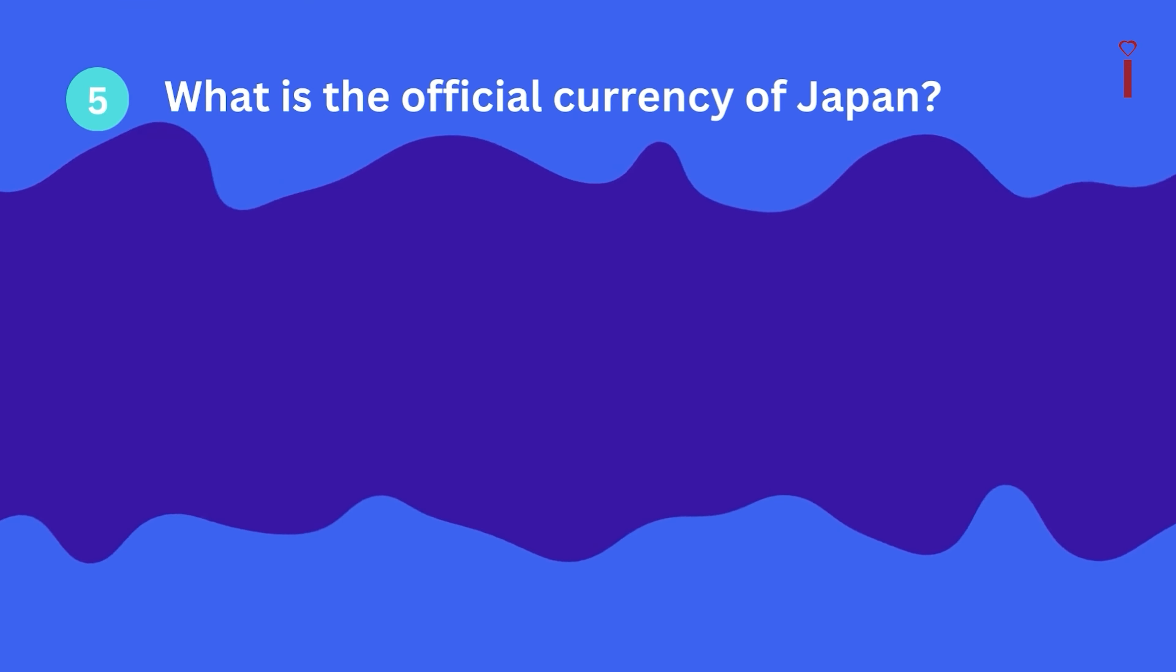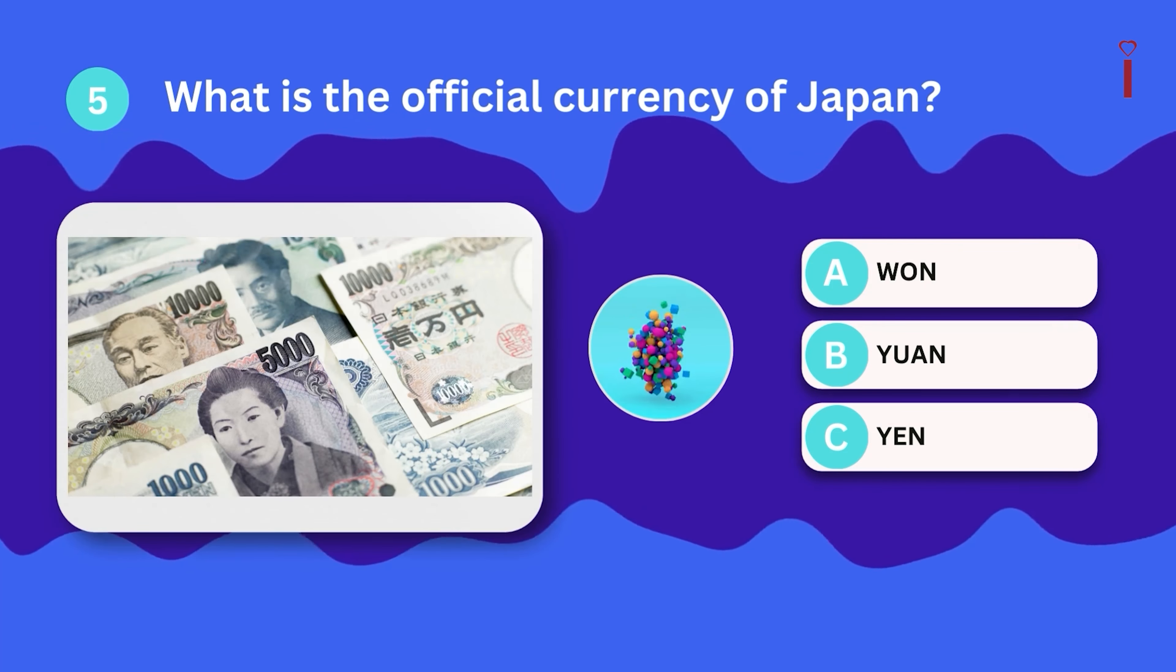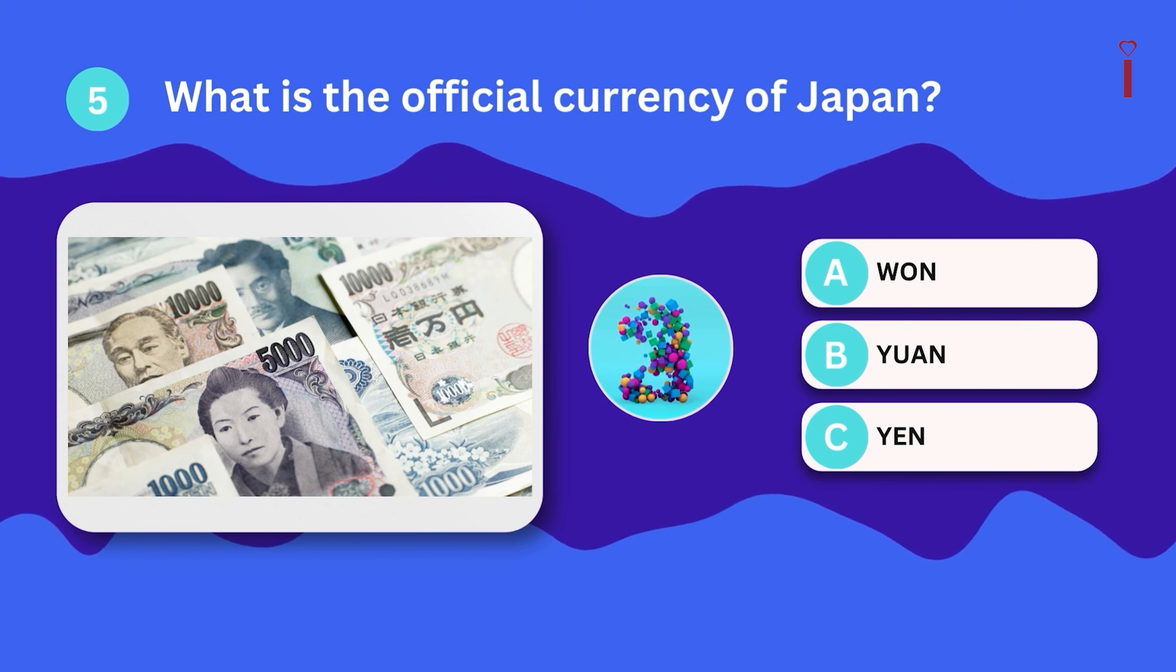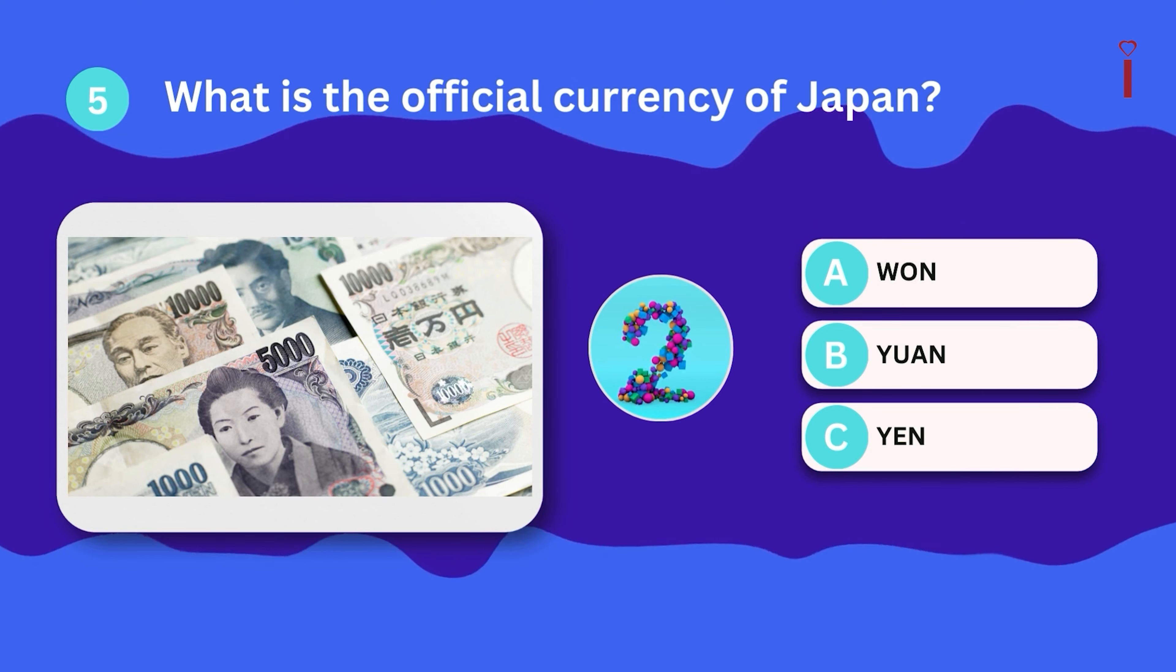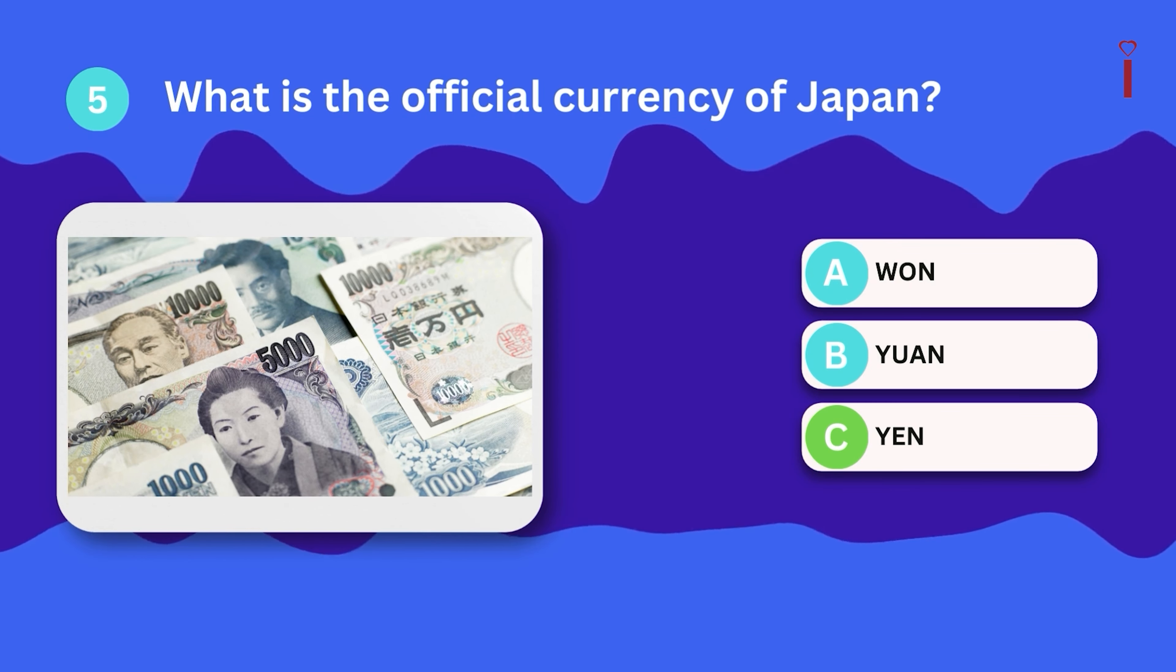Question number five. What is the official currency of Japan? Yuan, won, or yen? You've got this. It's the yen.